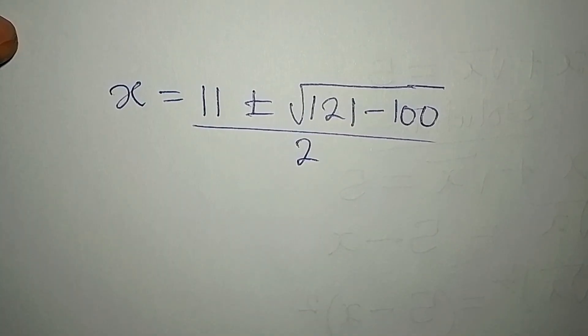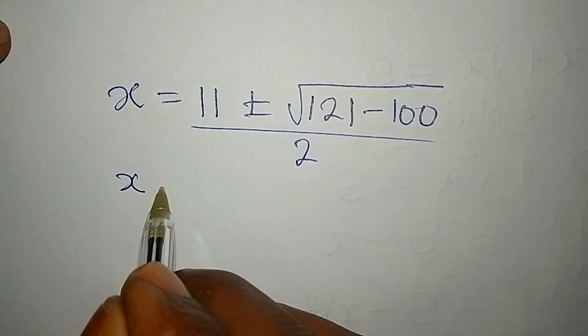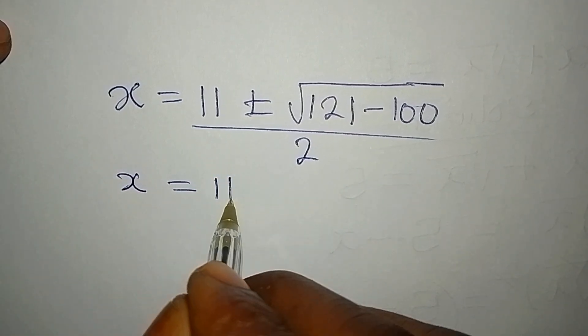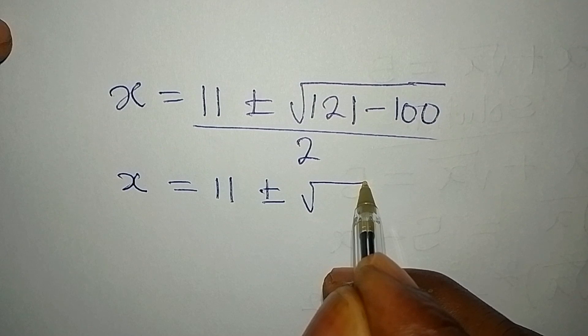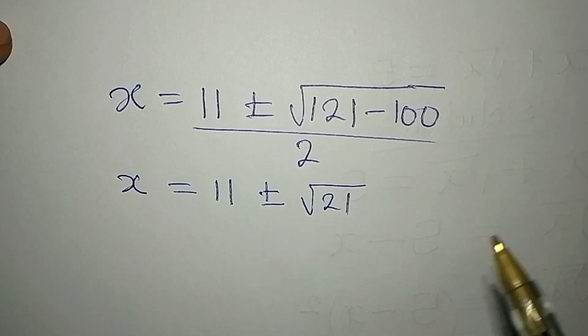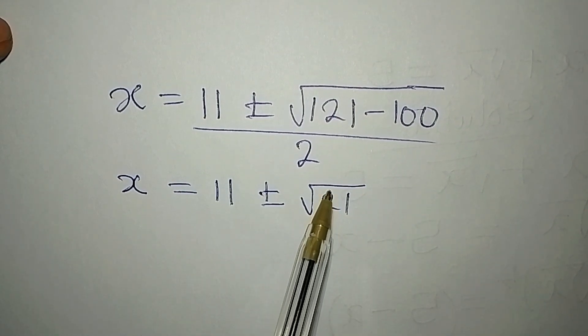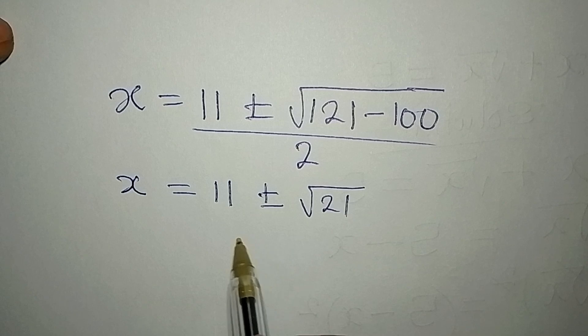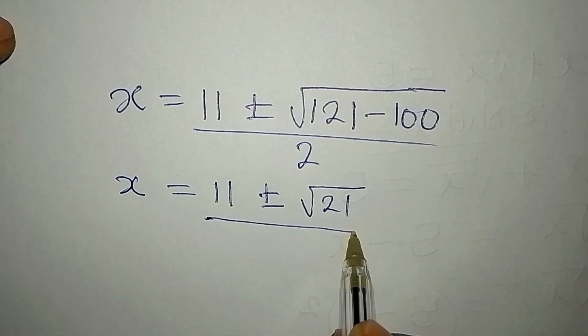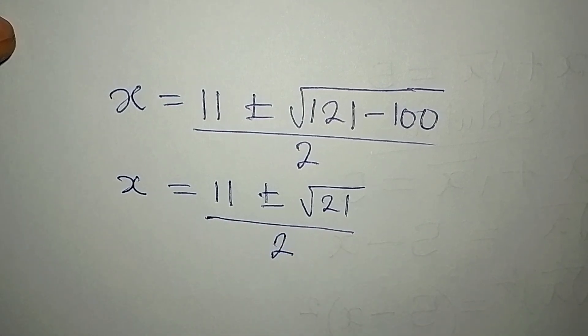Okay, so this is what we have and our x will be equal to 11 plus or minus square root of 21, because 121 minus 100 is 21, and this is all over 2.